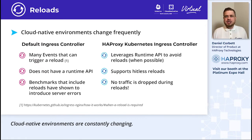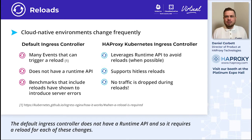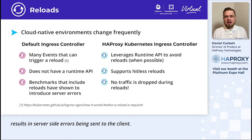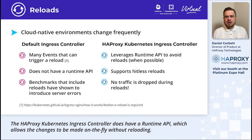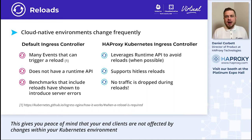Cloud-native environments are constantly changing. New ingress resources are added, routing rules are added or removed, and secrets are frequently updated. The default ingress controller does not have a runtime API, so it requires a reload for each of these changes. It was found during benchmarks that making changes which force a reload results in server-side errors being sent to the client. The HAProxy Kubernetes ingress controller does have a runtime API, which allows changes to be made on the fly without reloading. For those changes which do require a reload, it supports hitless reloads, which means no traffic will be dropped, giving you peace of mind that your end clients are not affected.